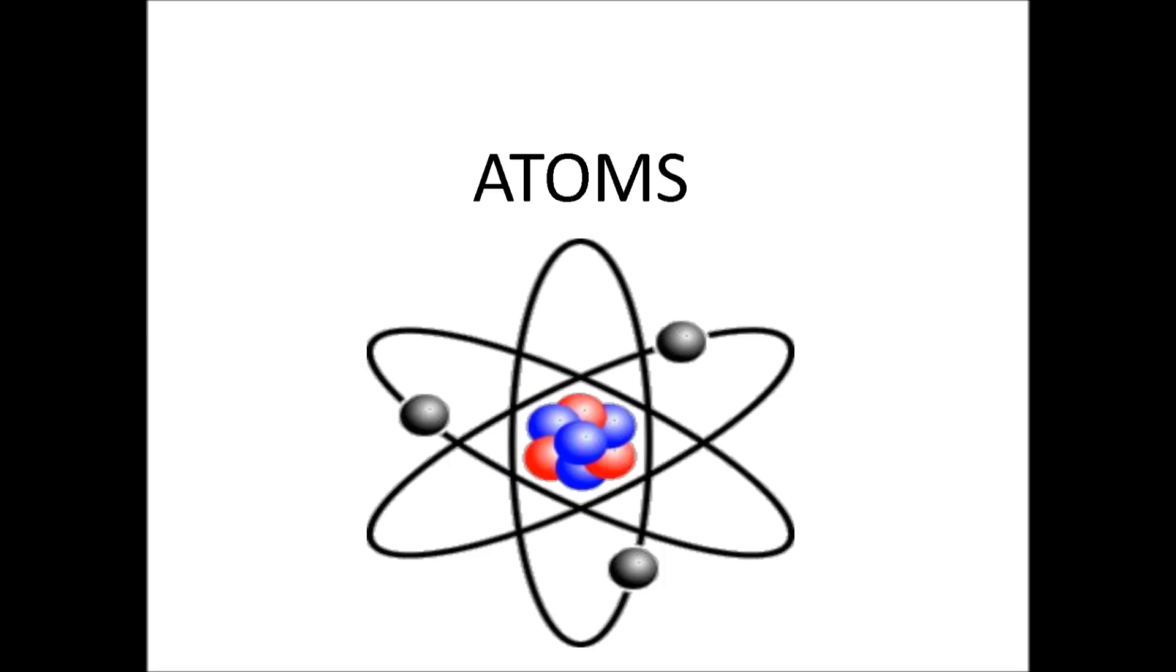Okay, so how do those constituent parts actually go together to make up an atom? The protons and neutrons are all concentrated in the centre of an atom. They make up the nucleus, which accounts for about 99.9% of the mass of the atom.